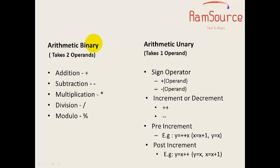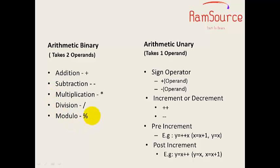First, arithmetic binary. In binary, it operates on two operands — it takes two operands. The operations are: addition, subtraction, multiplication, division, and modulo. These are the basic arithmetic functions. Modulo gives you a remainder. So these are the basic arithmetic operations for binary operators.